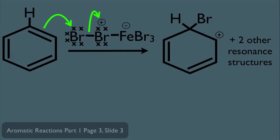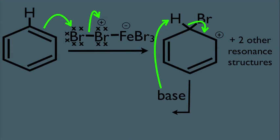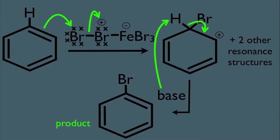Then we have the second step of our mechanism. A base comes along and abstracts this hydrogen. These electrons fall down between these two carbons, we reform the double bond and get our product. Notice we have a Br connected to the benzene ring instead of the hydrogen. This is halogenation, and notice it follows our general mechanism.